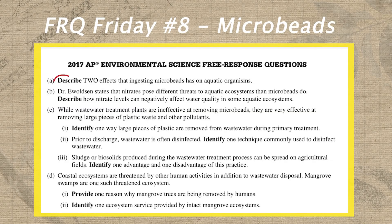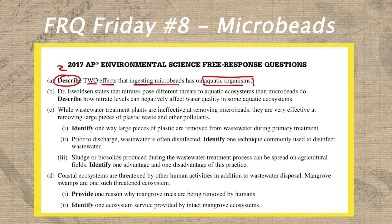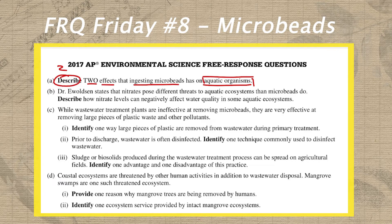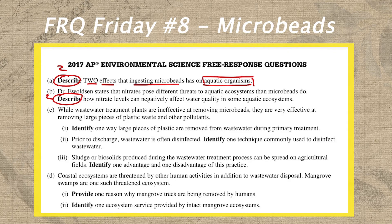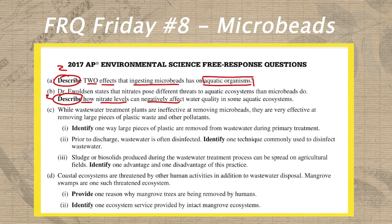In letter A, we start off with a describe prompt, so I'm gonna circle that and write a two above it. What we're describing are two effects that ingesting microbeads have on aquatic organisms. Our target has to be an effect of ingesting microbeads, and the frame is aquatic organisms — they have to be suffering the effects from ingesting these microbeads. In part B, we're asked about the difference between the threat posed by nitrates and microbeads — another describe prompt. What we need to describe is how nitrate levels can negatively affect water quality in some aquatic ecosystems. I'm going to underline the word 'how,' because that means we need a process about how nitrate levels are negatively affecting water quality in some aquatic ecosystems.